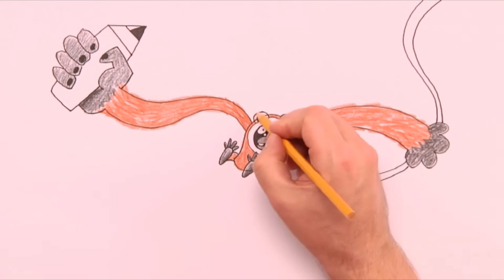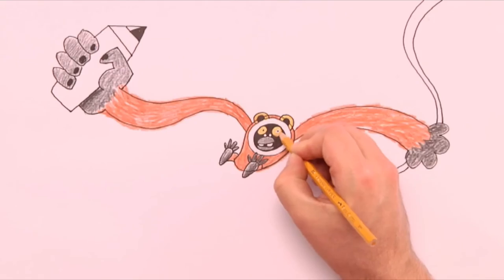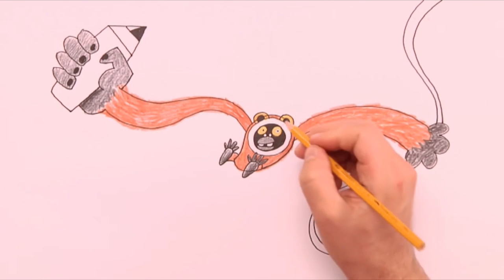The snout is also dark, but the ears get a lighter yellow color. And the same for the eyes.